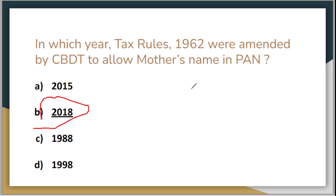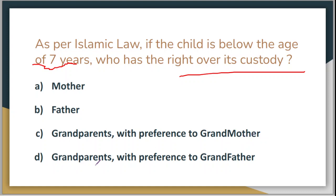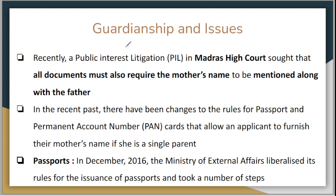Last question of this topic: as per Islamic law, if the child is below the age of seven years, who has the right over its custody? Option A is mother, Option B is father, Option C is grandparents with preference to grandmother, and Option D is grandparents with preference to grandfather. The correct answer is mother — as per Islamic law, the mother has the right of sole custody over a child below the age of seven years.